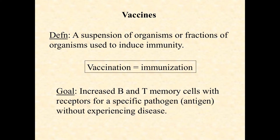So the goal is increased B and T memory cells with receptors for a specific pathogen — more specifically, a specific antigen and even a specific epitope of a specific antigen — without experiencing the disease.